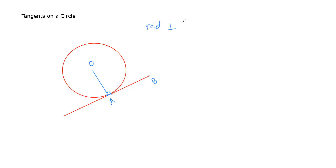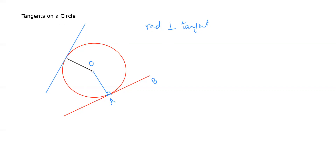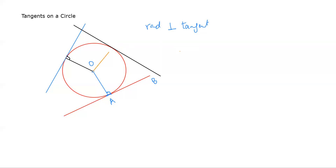The radius is perpendicular to the tangent. Whenever you draw the radius at the point where a tangent touches the circle, it is perpendicular to that tangent — there is a right angle there. This holds for every tangent drawn to the circle.